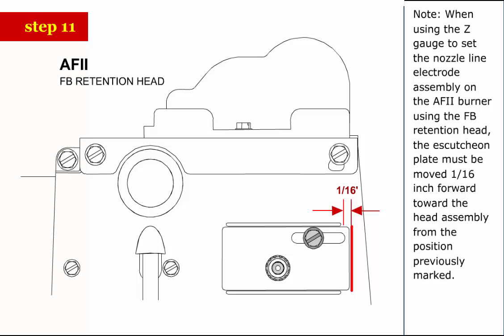Note: when using the Z gauge to set the nozzle line electrode assembly on the AF2 burner using the FB retention head, the escutcheon plate must be moved 1 sixteenths inch forward toward the head assembly from the position previously marked.